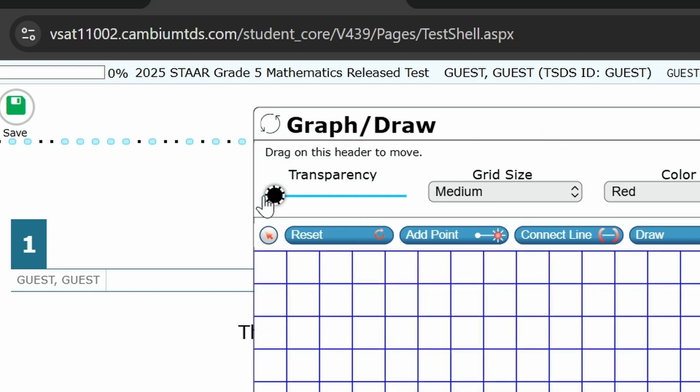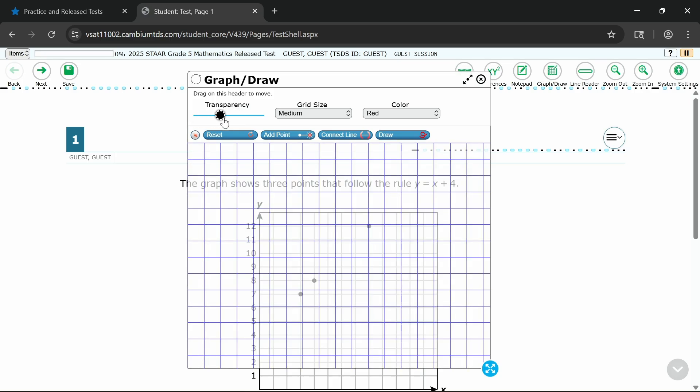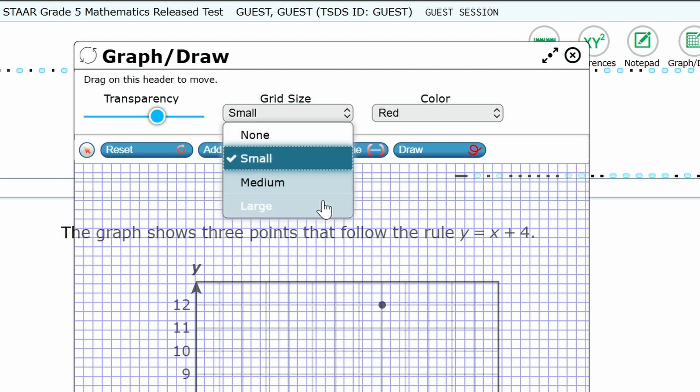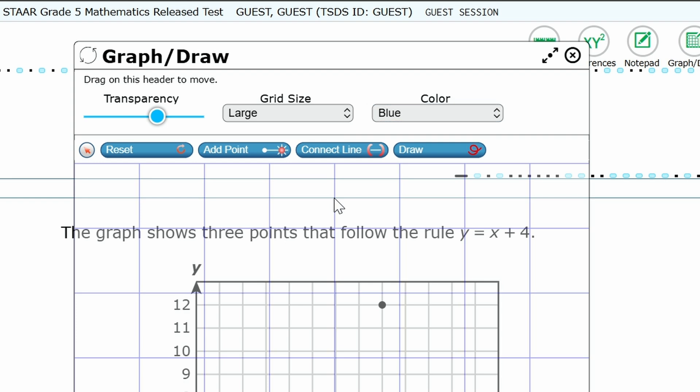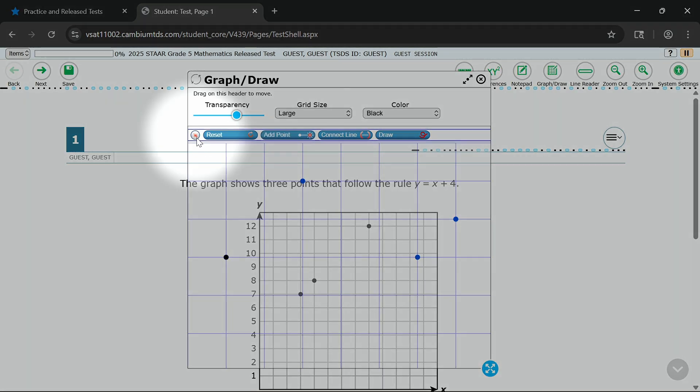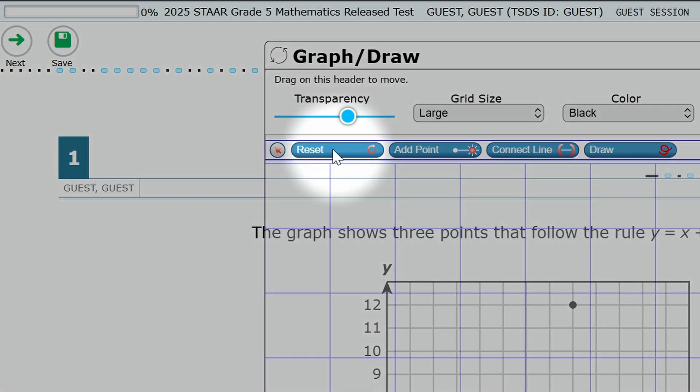Use it to adjust transparency with the slider so you can see the question underneath. Use the grid size selector to change how big the grid is. Change colors with the color dropdown to make your work stand out. Use the red arrow to undo your last step. Click Reset to clear everything for a fresh start.